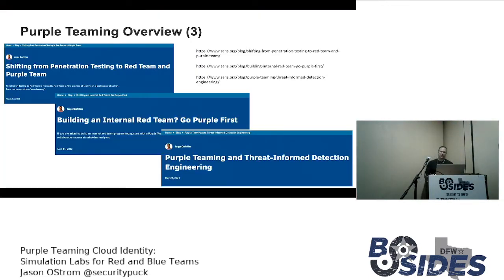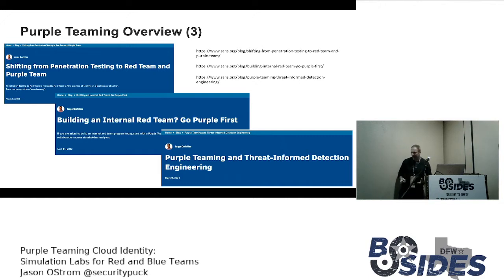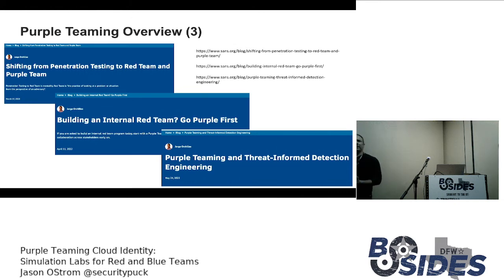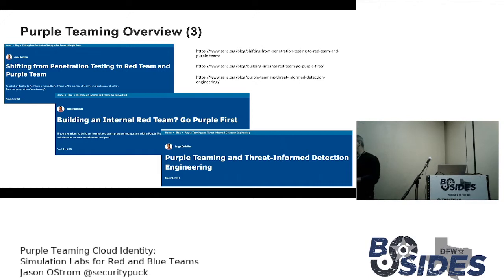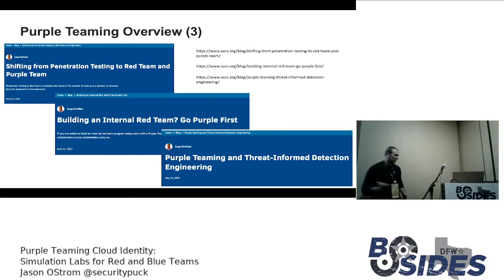One more slide on purple teaming. There's a guy named George Aquiles who has a lot of great resources on building your security program with purple teaming. He has a project called the Atomic Purple Team Framework — a tool where you take TTP-related exercises, get the CIO and CISO to approve them, run the red team exercise, then look in the logs to see if your logs actually detect the attack.